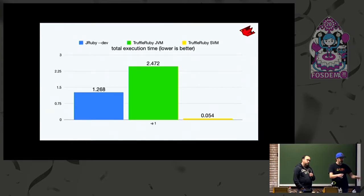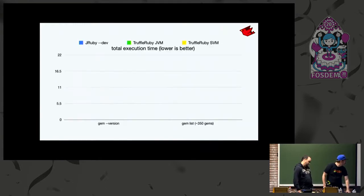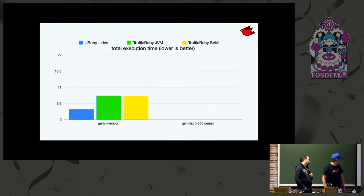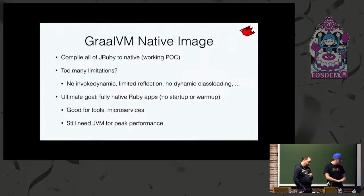If we make TruffleRuby do a little more real work — gem version, which forces all of RubyGems to load, or gem list with a large number of gems — we see JRuby versus TruffleRuby JVM and native: they're two to three times slower than us for a basic gem command, and it gets worse the more work they do, because that Ruby code goes through the same cold process. What we want to do: we've already compiled all of JRuby itself to native and got it to run and boot, but there are limitations — no invokedynamic, no runtime JIT, no dynamic class loading.